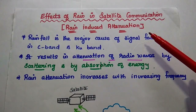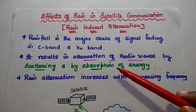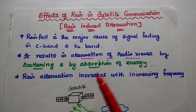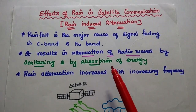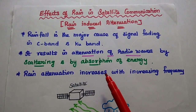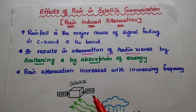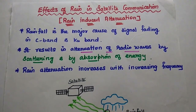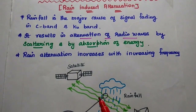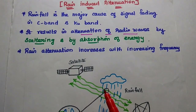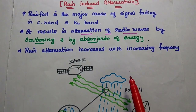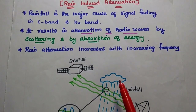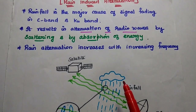Signal fading represents the attenuation of the radio waves. Rainfall results in attenuation — reducing the signal strength by scattering and by absorption of signal energy while propagating through the rainfall. The rain attenuation increases with increasing frequency, meaning attenuation is directly proportional to the frequency range.